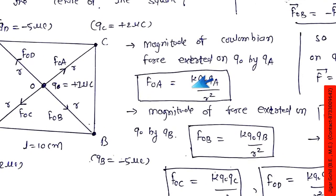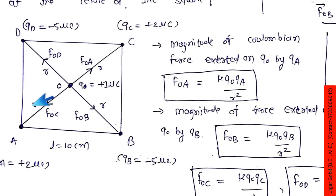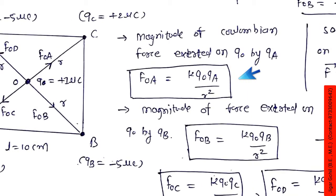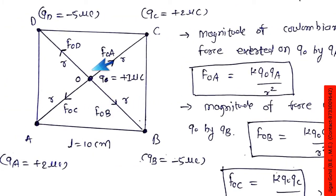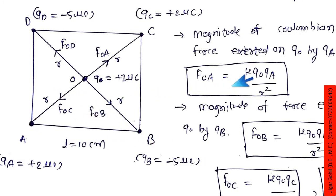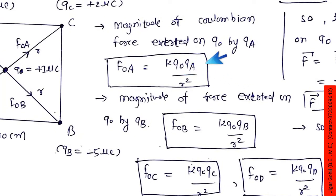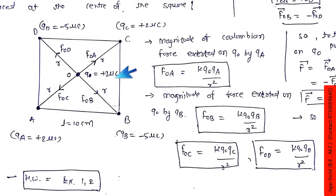Exerted on q0 by this qa charge. So FOA is equal to k·q0·qa divided by r², this is Coulomb's law. FOA = k·q0·qa / r². The distance from O to all corners is the same, which we call r. Same way we can find FOB = k·q0·qb / r².